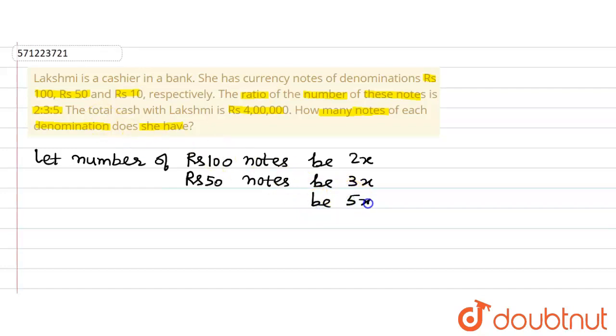So we are assuming rupees 100 notes to be 2x, rupees 50 notes to be 3x and rupees 10 notes to be 5x. So now we will solve it further.